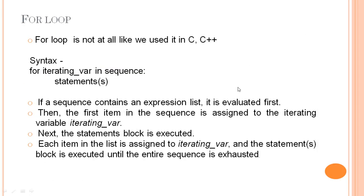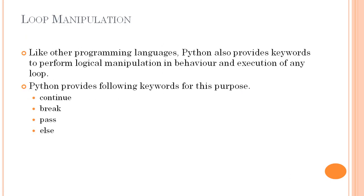Now we will move towards the next part of our lecture: loop manipulation statements. Like other programming languages, Python also provides keywords to perform logical manipulation in the behavior and execution of loops. Python provides continue, break, pass, and else as loop manipulation statements. The continue statement is used in a loop along with condition checking with if. If that condition is true and there is a continue statement, the lines after the continue will never get executed, and control will be assigned to the beginning of the loop for the next counter value.